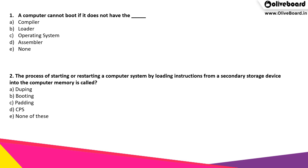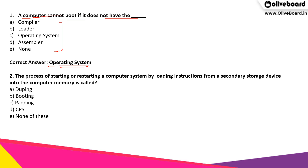The first question is: a computer cannot boot if it does not have the what? The correct answer is option C, i.e., operating system. If a computer does not have an operating system, it cannot boot.